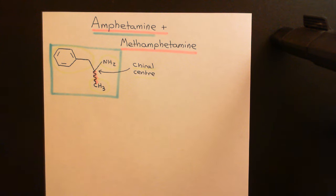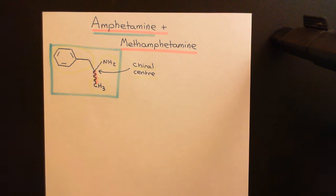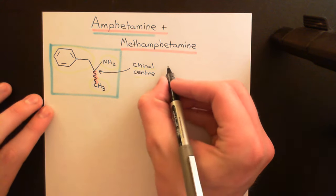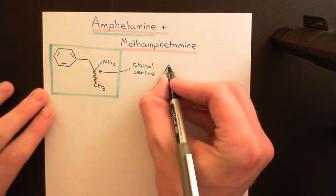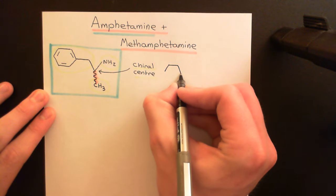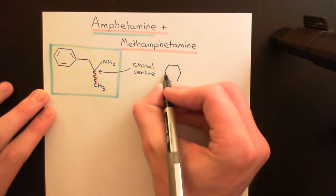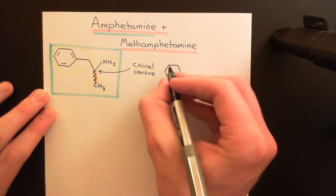Whenever you have four different groups coming off a carbon atom, that carbon atom is called a chiral centre. It is special because it gives rise to two different optical isomers of the molecule. So amphetamine actually has two separate types — there are two different optical isomers of amphetamine, and I want to explain this in more detail.